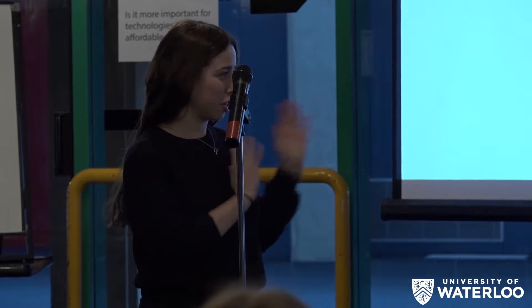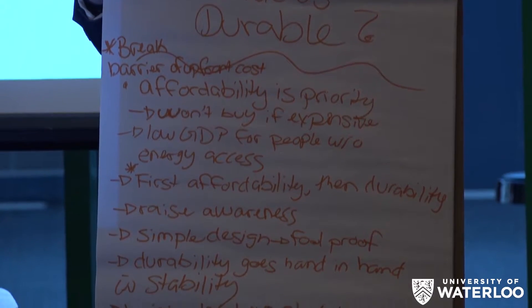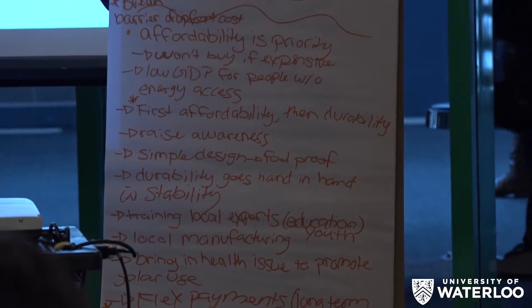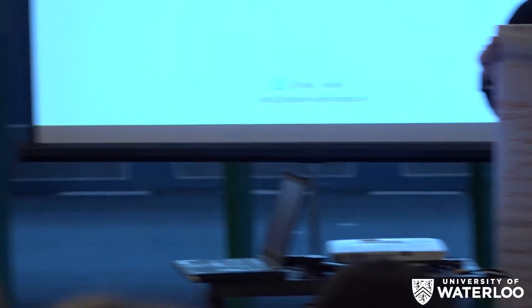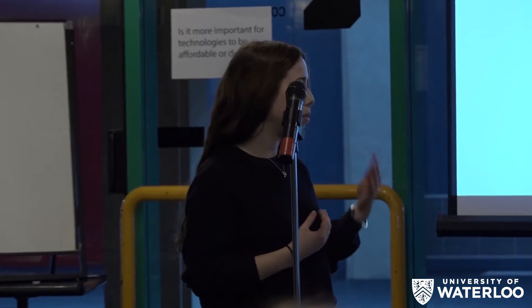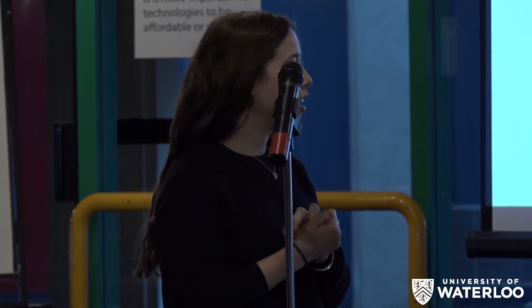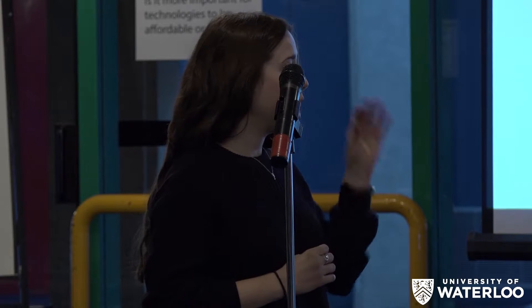Our group spoke about affordable versus durable. We agreed that affordability is the priority because it's the indicator that gets people to adopt and be attracted to certain products — we're talking about solar panels and solar home systems. They won't buy it if it's expensive and they don't see the value. A lot of these people have extremely low GDP, so price is everything. Affordability is priority, but durability is next.